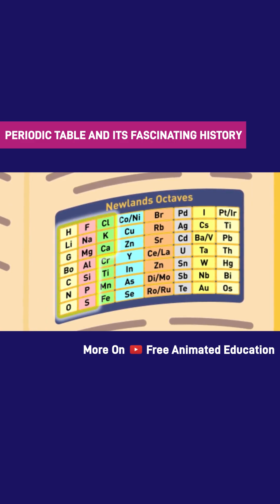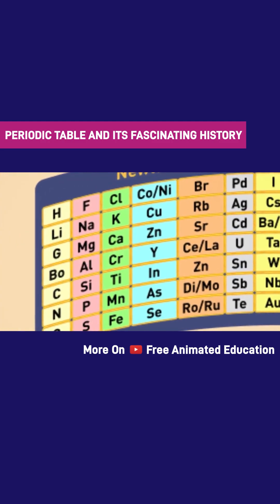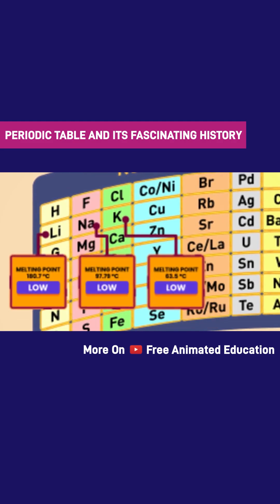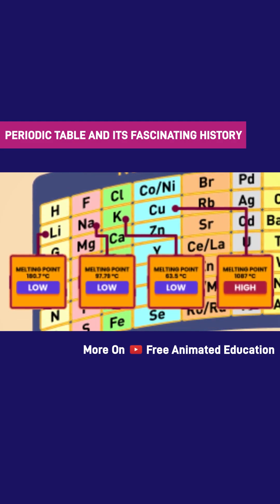The problem was that although the pattern did exist at first until calcium, it eventually broke down and resulted in some elements being grouped together despite not having similar properties.